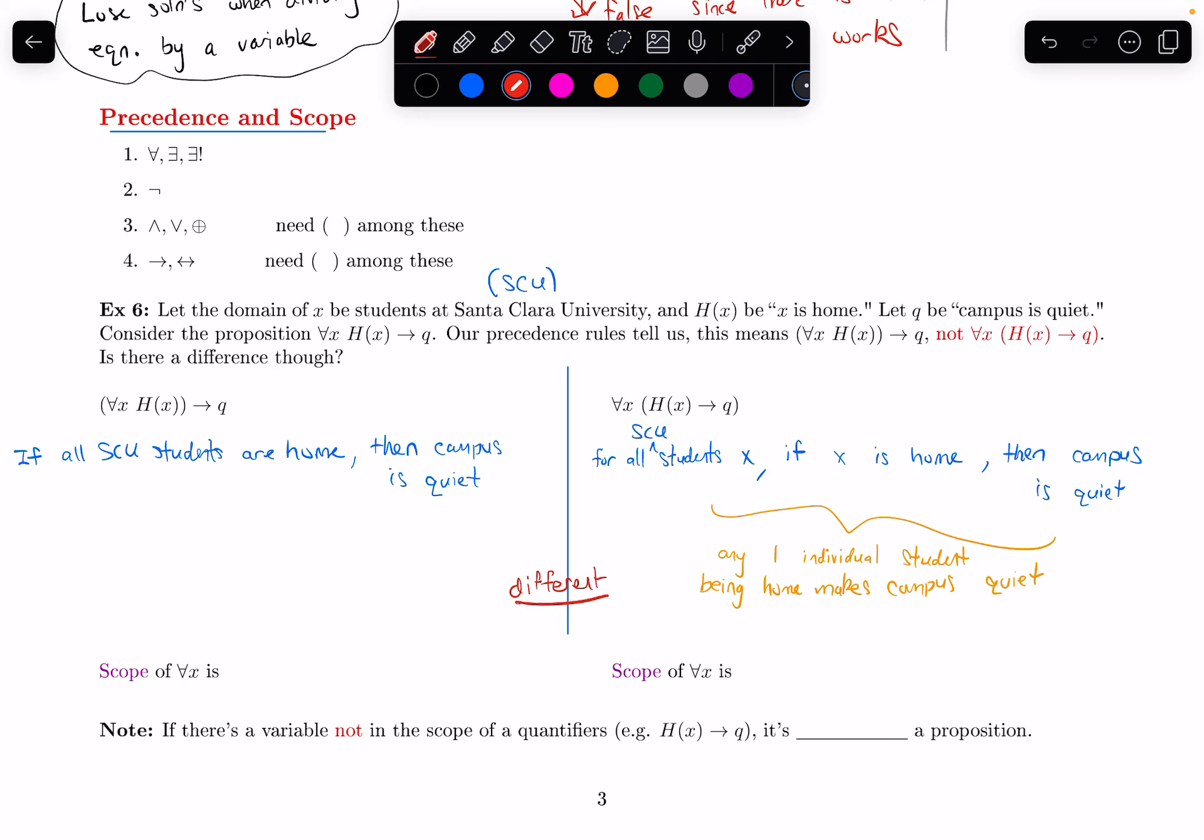So now I want to end the video by defining what's called scope. The scope of a quantifier refers to what does it apply to. In the first statement, the for all applies to just H(x). So I say that the scope of the for all X is H(x).